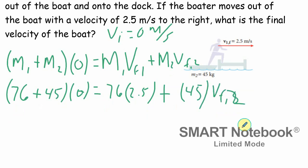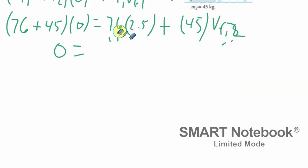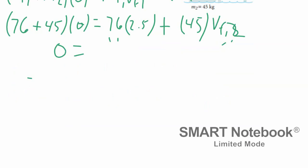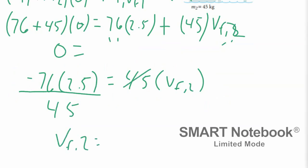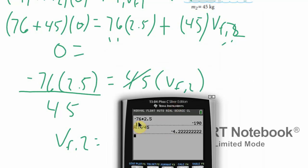Obviously everything over here on the left is zero. And so that equals all of this. Now I'm going to subtract the 76 times 2.5. So negative 76 times two and a half is equal to 45 times the final velocity of object two which is the boat. And so now it doesn't figure too hard to tell. We're going to divide by 45. So 45 gets canceled out. And so our final velocity of the boat that I already have up here on the calculator. So bringing this in. This is the negative 76 times two and a half. So we got a negative 190 divided by 45.